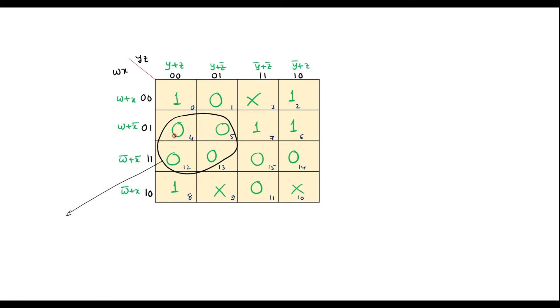So value of this will be... it covers these two columns. The common factor here is y. That is y plus it covers these two rows. Common factor is x bar. That is y plus x bar.